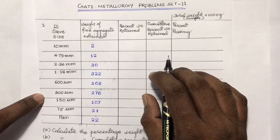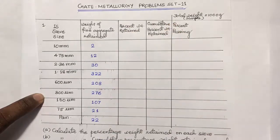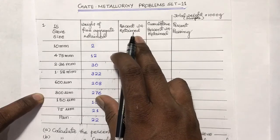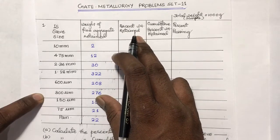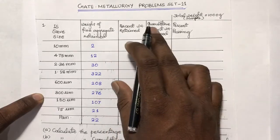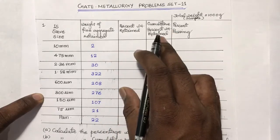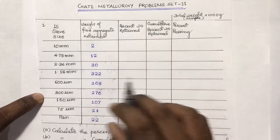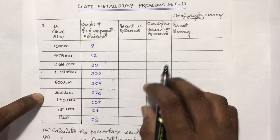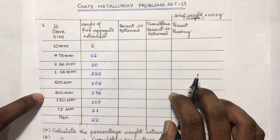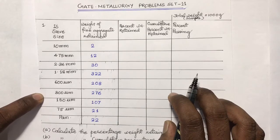This is a sample problem in which we have to calculate the percentage weight retained on each sieve, as well as the cumulative weight percentage retained on each sieve, as well as the percentage passing of aggregate through each sieve.